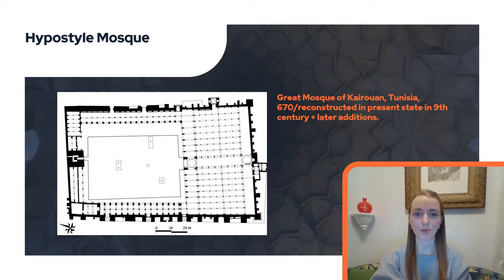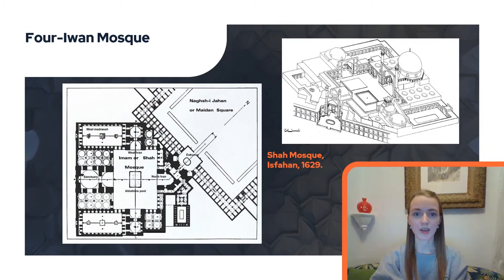The earliest type of mosque architecture is the so-called hypostyle mosque, like the Great Mosque in Kairouan. These were rectangular and the interior was constructed as a pillared hall. In front of the prayer hall is a wide courtyard.